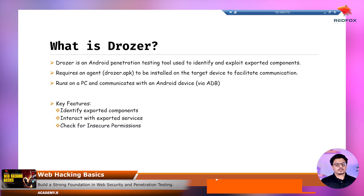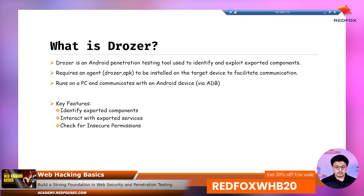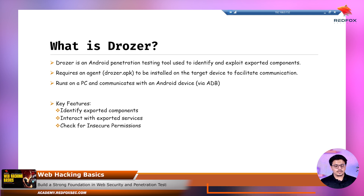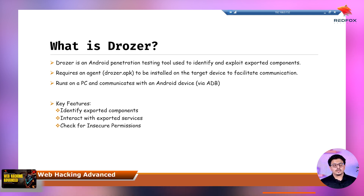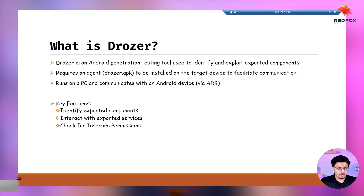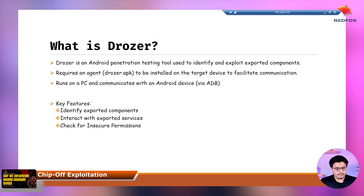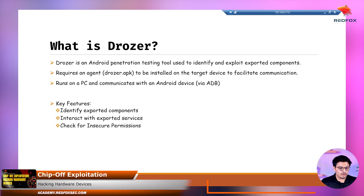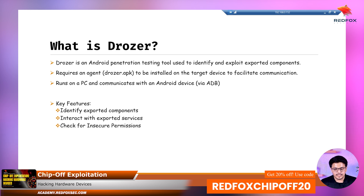What exactly is Drozer? Drozer is an Android penetration testing tool used to identify and exploit various components. It also requires an agent — called the Drozer APK — to be installed on the target device. What I mean by agent is that there is a kind of APK which you need to install on the emulator or Android device you are using for penetration testing. You install that APK first and then connect it with your local system to facilitate communication between the Drozer tool.